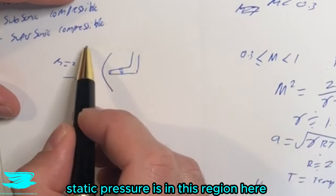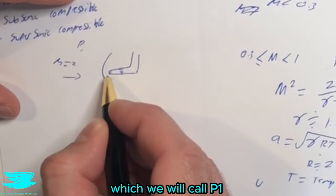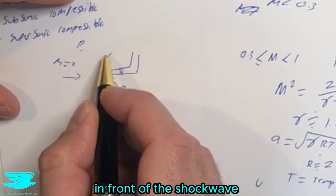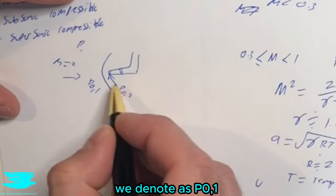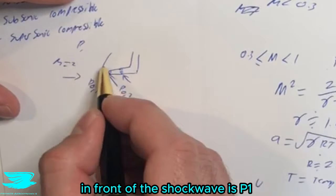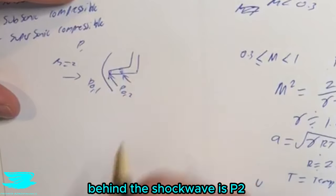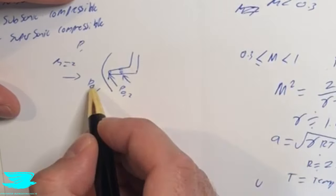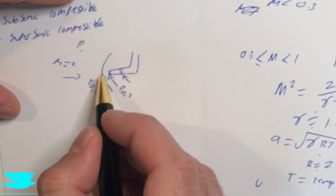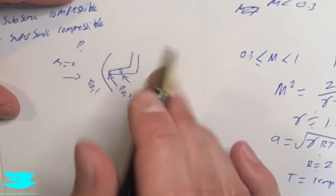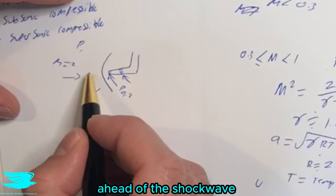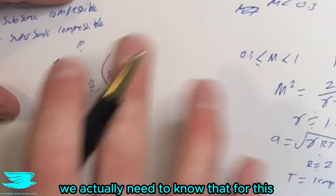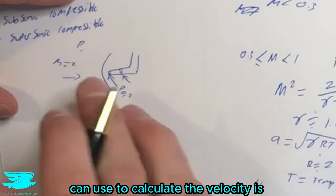We can still calculate the velocity fairly easily, as long as we know the static pressure ahead of the shock wave (p₁) and the total pressure behind the shock wave measured by the pitot tube (p₀₂). The total pressure ahead of the shock is p₀₁ and behind is p₀₂; the static pressure ahead is p₁ and behind is p₂. We can measure p₀₂ with the pitot-static tube, but we cannot directly measure the total pressure ahead of the shock — we must use a mathematical approach instead.